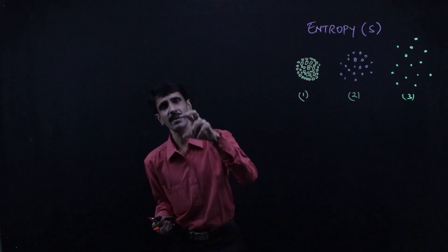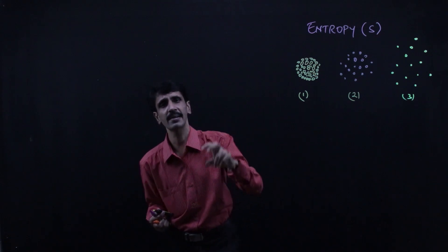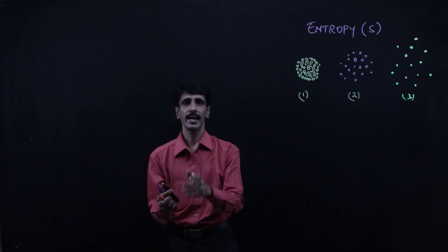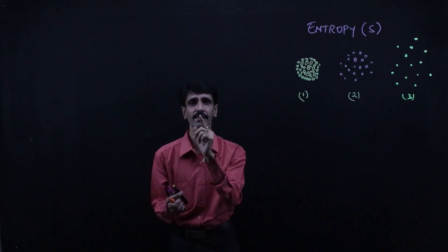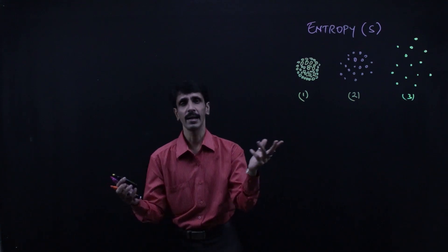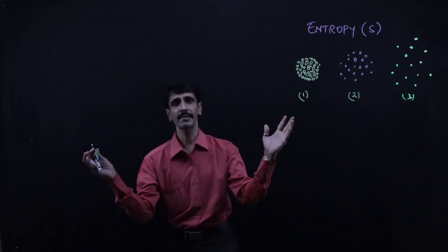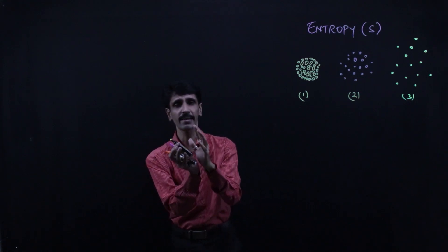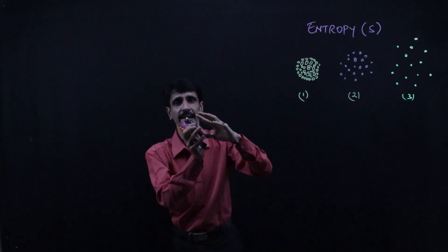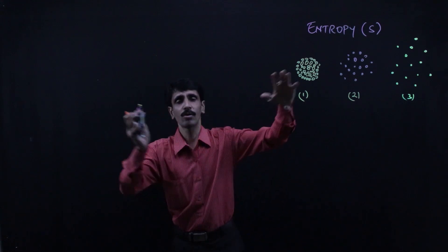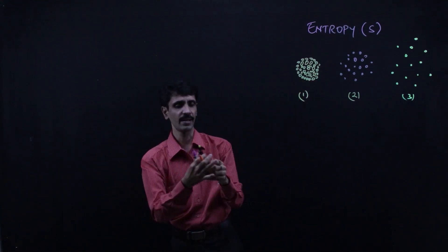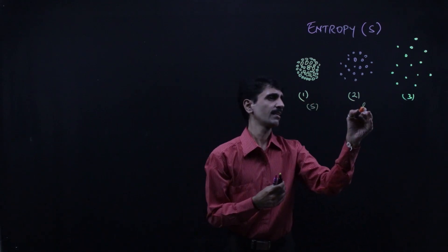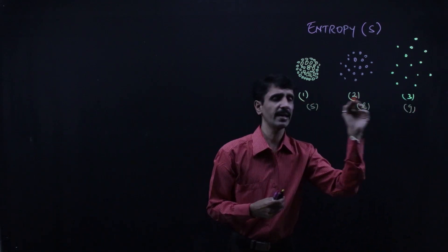This interaction amongst the particles can be related to physical state as well. In the case of a solid, the particles are very close to each other; in a liquid, the particles slightly move away; and in a gas, they go very widely apart. So arrangement one is solid, two is liquid, and three is gas.